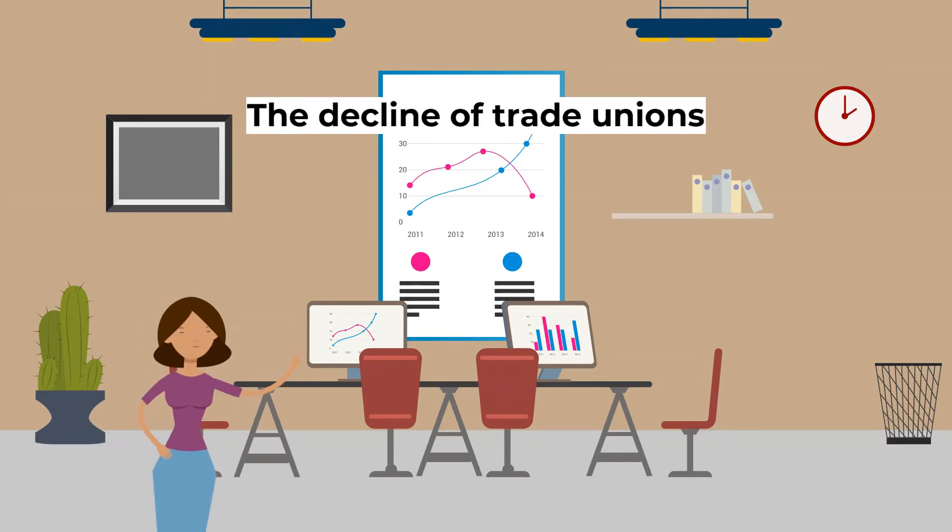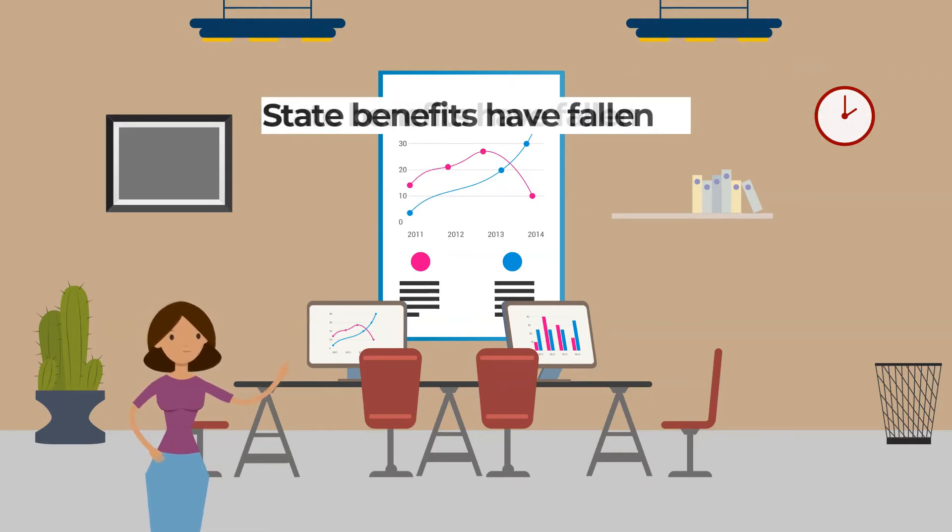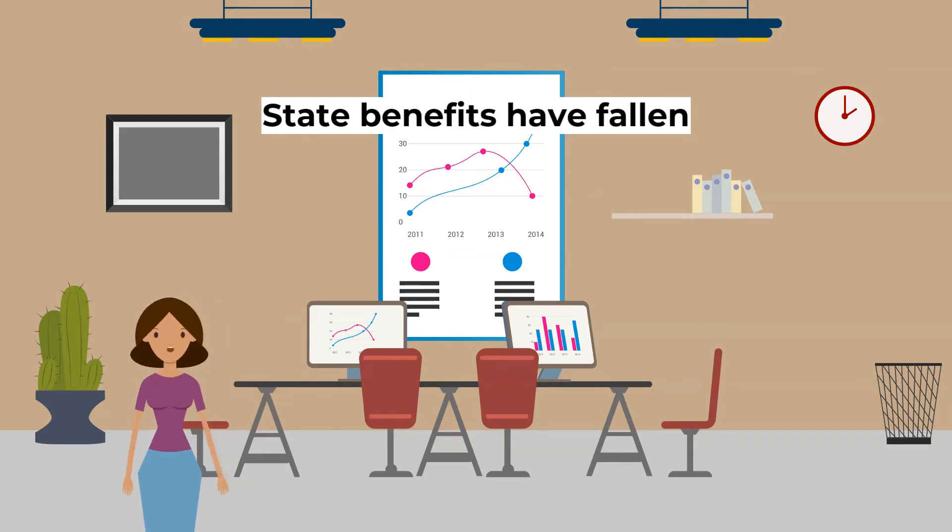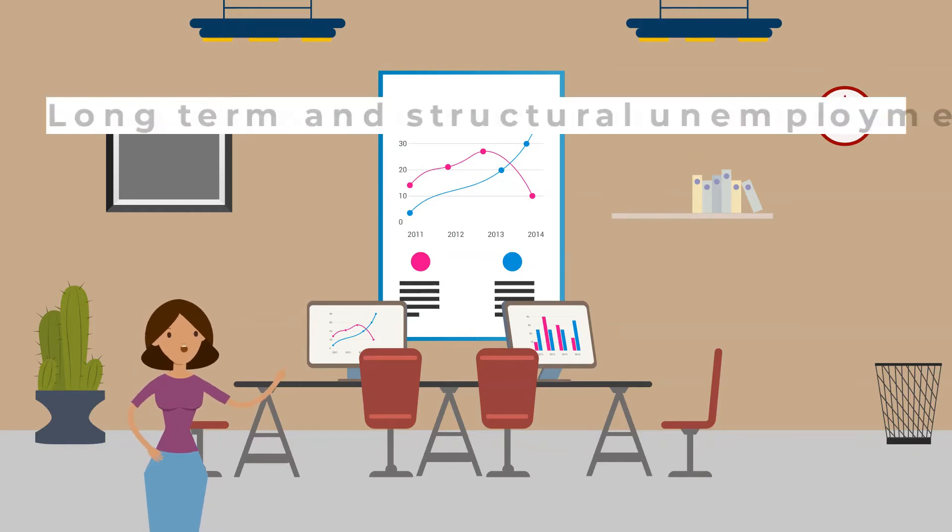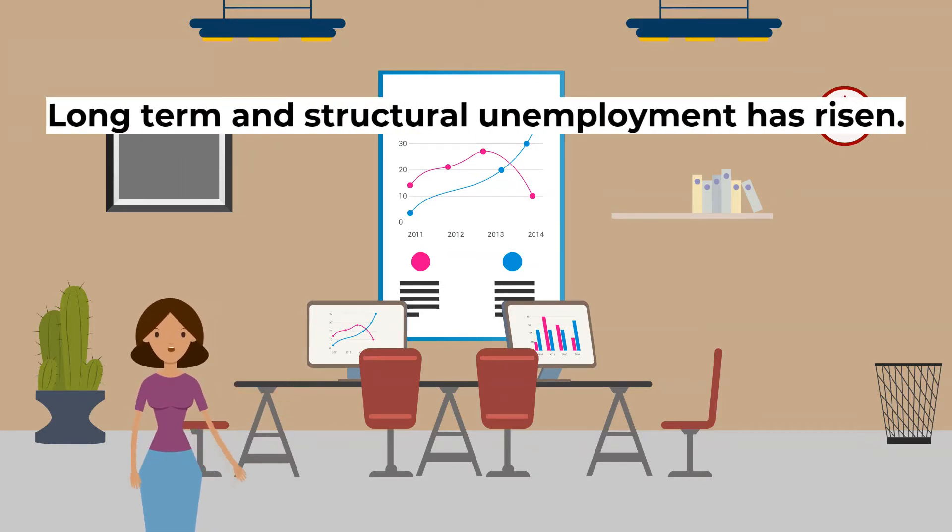The decline of trade unions has left many workers unable to bargain for higher wages. On top of this, state benefits have fallen in relative value whilst taxes have become more regressive. Moreover, long-term and structural unemployment has risen.